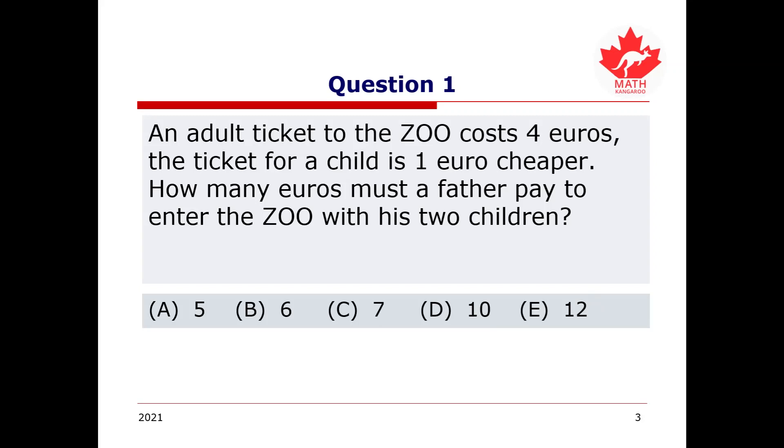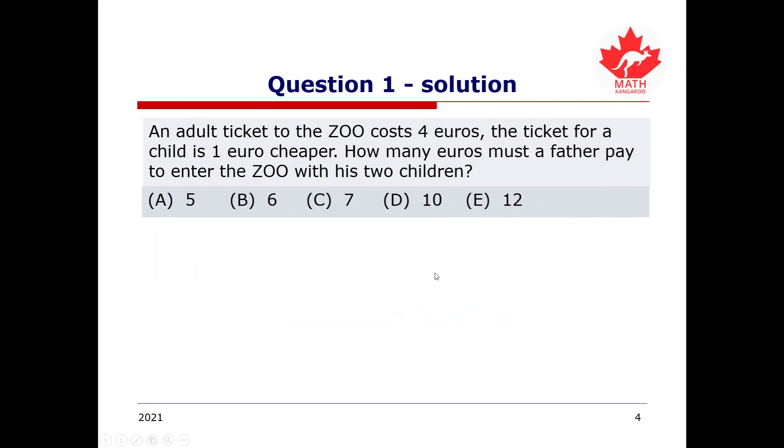Have you gotten the answer? Well, let's check out. So, first we should ask ourselves what the question is asking us to solve here. In this case, we need to find out the total amount of money the father with two children needs to pay to enter the zoo.